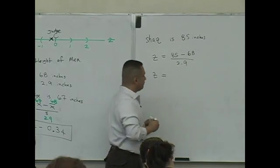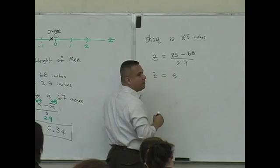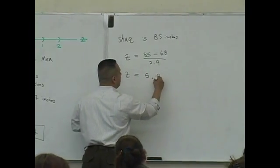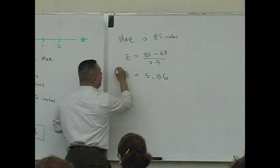What is it? Five point, round to the nearest hundredths? Is it 5.86? Yeah. Okay. Shaq is 5.86.